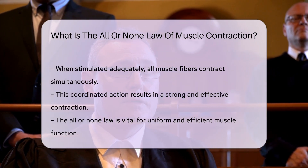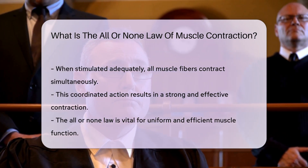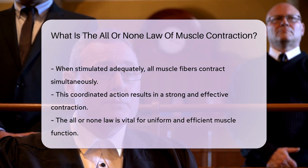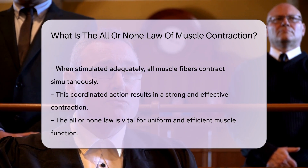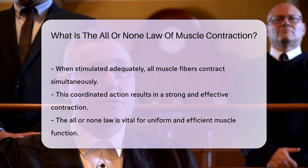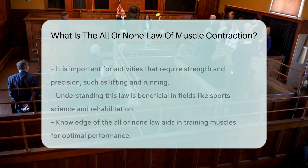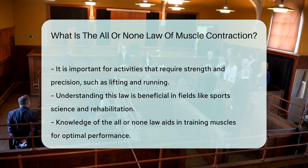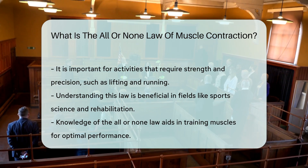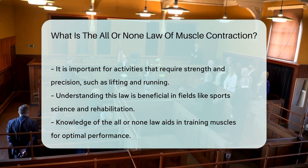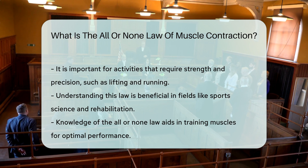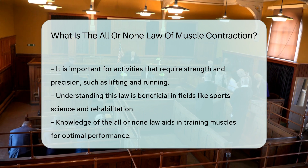The all-or-none law is essential for muscle function. It ensures that muscle contractions are uniform and efficient. This law is crucial for activities requiring strength and precision, such as lifting or running. Understanding this law can help in various fields, including sports science and rehabilitation. It provides insight into how muscles work and how they can be trained for optimal performance.